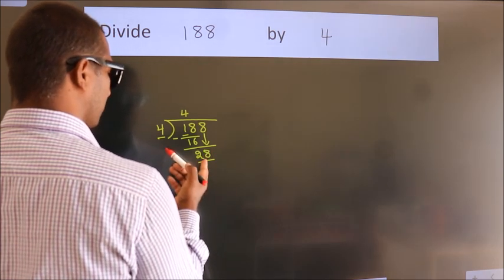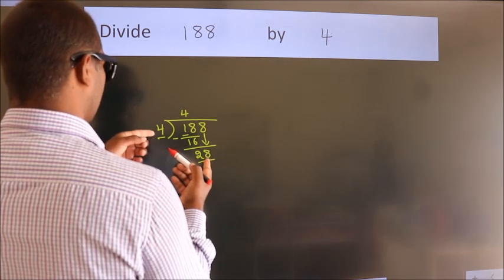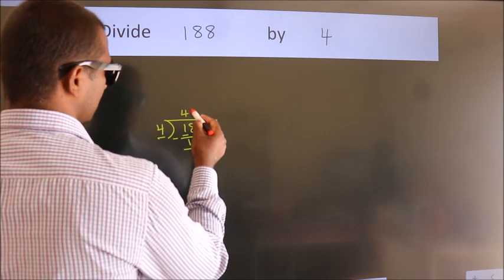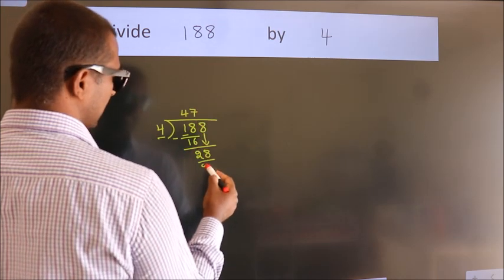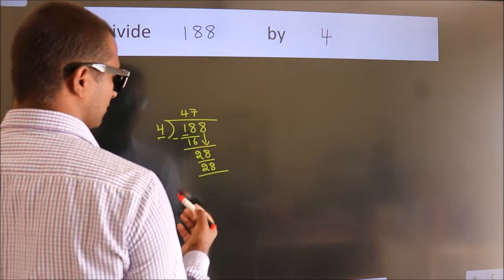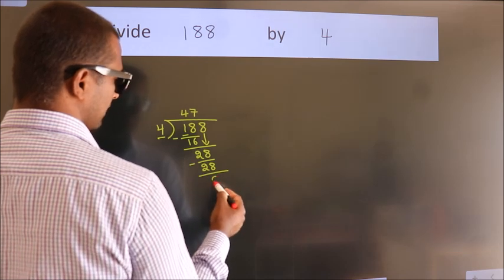So 28. When do we get 28 in the 4 table? 4 times 7 equals 28. Now we subtract. We get 0.